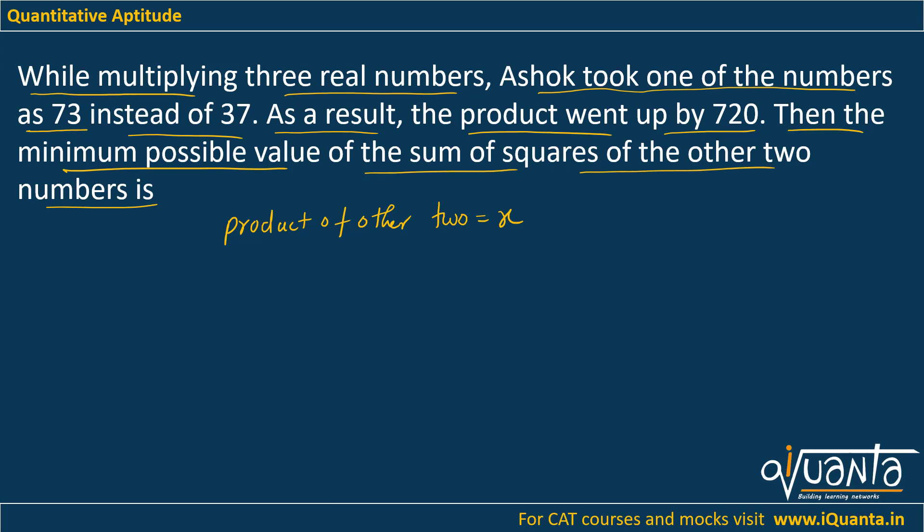Now due to this mistake, by taking one number as 73 instead of 37, the product went up by 720. So new product minus old product, their difference must be equal to 720. What is the new product? 73x minus old product—that means earlier when everything was correct, one of the numbers was 37 and the product of other two numbers was x. So this difference must be equal to 720. When we calculate the value of x from here, we get x equal to 20.